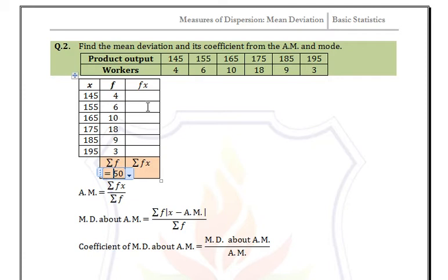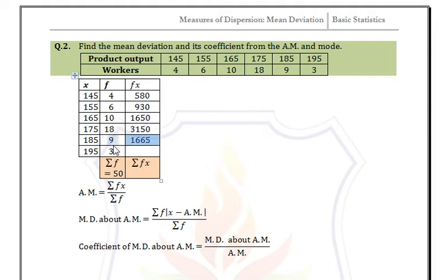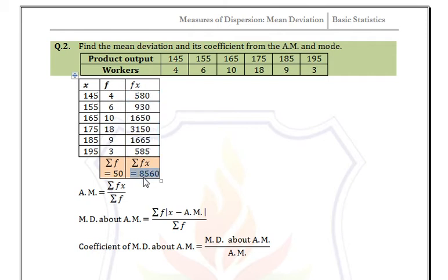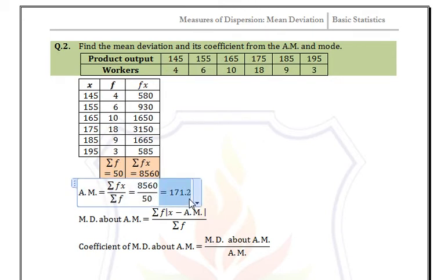The sum of all frequencies is 50. For fx, we multiply each frequency by its corresponding x value: 145×4, 155×6, 165×10, 175×18, 185×9, and 195×3. Adding all fx values gives summation fx = 8560. Substituting into the formula, the arithmetic mean = 8560 / 50 = 171.2.